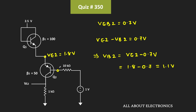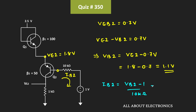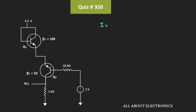So from this, we can easily find the base voltage. VB2 is equal to VE2 minus 0.7V, that is equal to 1.8V minus 0.7V, or it is equal to 1.1V. So the voltage at the base of the second transistor is equal to 1.1V. Now if we apply KVL in this loop, we can easily find the base current: IB2 is equal to VB2 minus 1V divided by 10kΩ, that means IB2 is equal to 0.1V divided by 10kΩ.